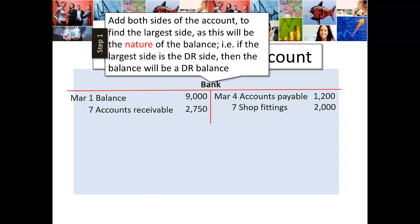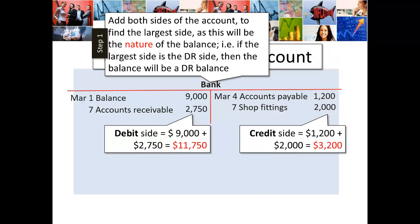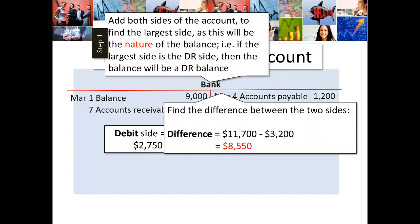The first step to balancing a ledger account is that you add both sides of the account — the debit side and the credit side. That's going to tell you the nature of the balance. The largest side determines the balance: if the largest side is the debit side, the balance will be a debit balance; if it's the credit side, it will be a credit balance. The debit side totals $9,000 plus $2,750, giving a grand total of $11,750. On the credit side, those two transactions total $3,200. Step one done.